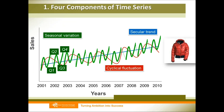But sometimes our sales are difficult to predict because there are irregular, unexpected things that happen. We call this irregular variation. For example, an earthquake or September 11th — these are unexpected events that also influence our sales.